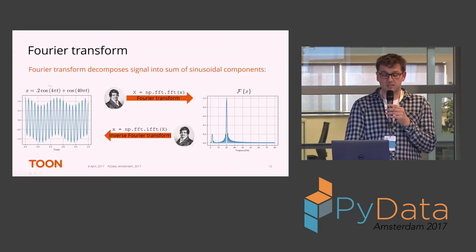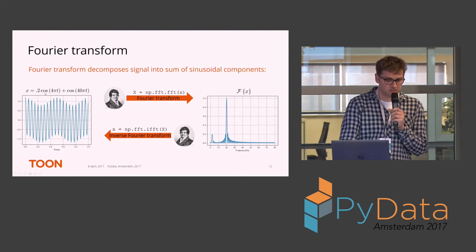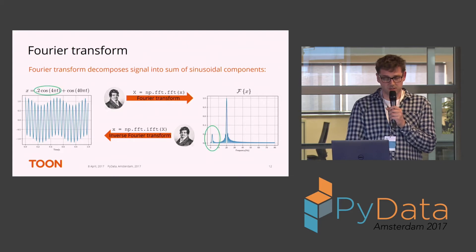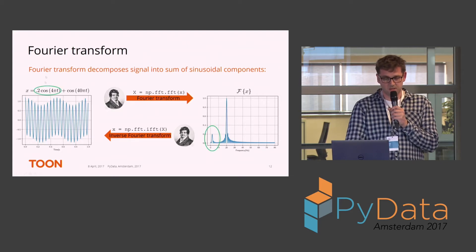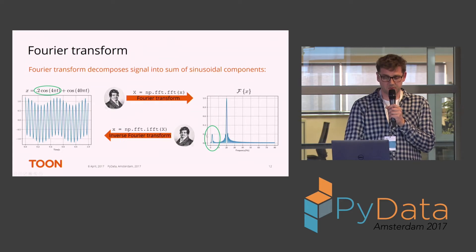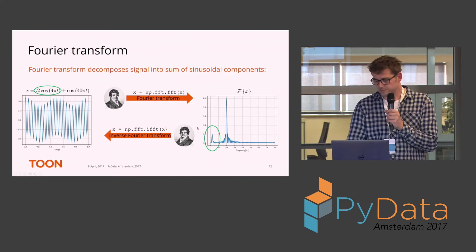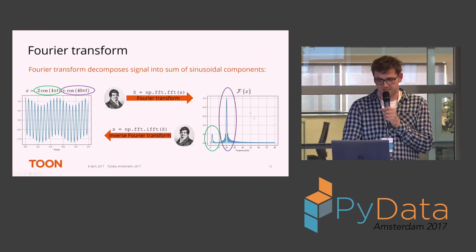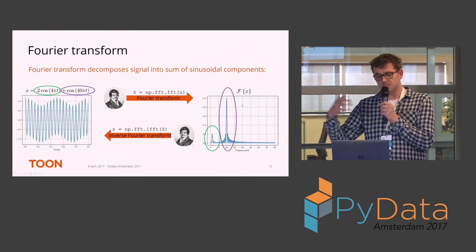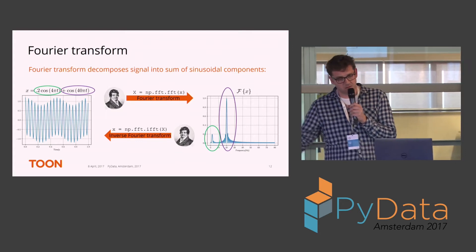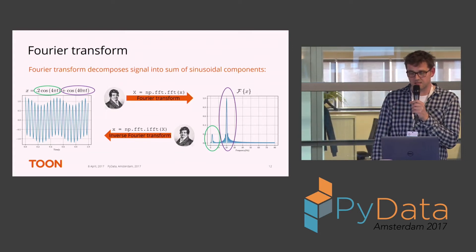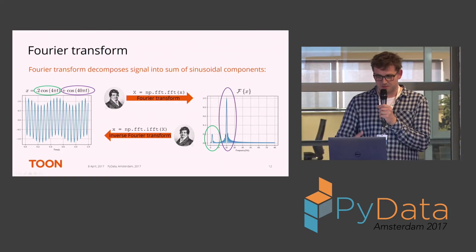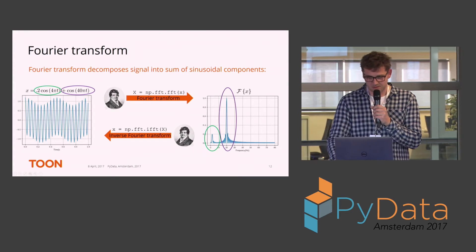In this example I have a signal which is the sum of two sinusoids. There's one low-frequency component around 2 Hz with an amplitude of 0.2, and in the FFT domain you can nicely see the 0.2 amplitude at that peak. We also have a high-frequency component around 20 Hz with an amplitude of 1. So from this frequency-domain representation you can nicely see which frequencies are present in the signal. And for those wondering, this is Joseph Fourier, the founder of the Fourier transform.